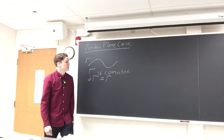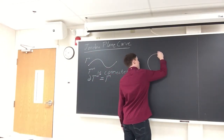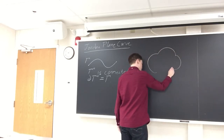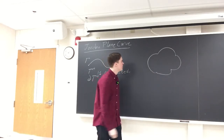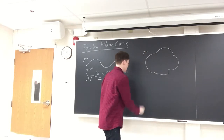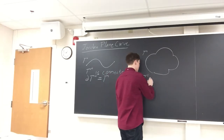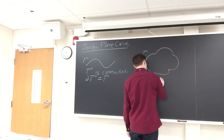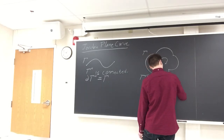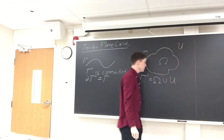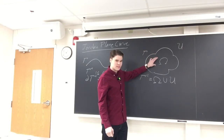The second version is if we have a piecewise smooth, simple, closed curve — so it doesn't intersect itself and the starting point equals the end point. Then the theorem says that the complement of gamma has two connected components. We'll call one omega, the interior, and the other u, the exterior. We know that u is unbounded and omega is bounded and simply connected.